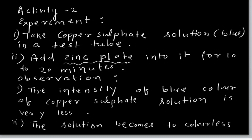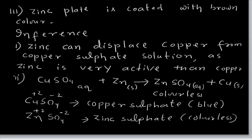Observation: zinc sulphate colour is colourless, whereas copper sulphate colour is blue. When zinc is dipped in copper sulphate solution, the intensity of the blue colour decreases very much. The colour gradually decreases and the solution lastly becomes colourless, because zinc sulphate is produced and zinc sulphate is colourless. The zinc plate becomes coated with a brown colour — brown means copper metal is deposited on it.